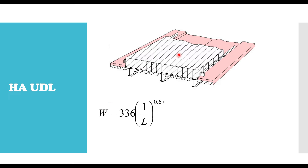The HA UDL is given by the formula: W = 336(1/L)^0.67, where L is the loaded length of the bridge. For example, if your bridge is 3 m wide by 8 m long, the 8 m longitudinal span is the loaded length, because that is where the traffic passes longitudinally. The width of the notional lane is along the transverse direction. This formula applies when the span of your bridge is less than or equal to 50 metres.